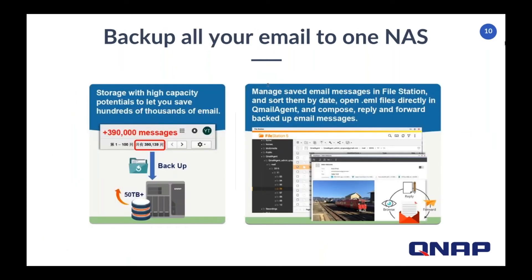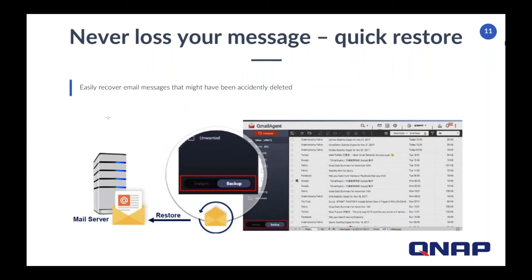Backing up your emails is a key feature of QMail Agent. This allows you to keep your email services tidy and free up storage space on your email accounts without having to worry about losing an email that you need later. QMail Agent backs up both your emails and attachments automatically. You can manage saved emails in File Station and sort them by date, open EML files directly in QMail Agent, and also reply to and forward backed-up emails. When you're freeing up space on your email service, you may end up deleting an email you might need down the road — but with QMail Agent, you can easily and quickly restore it from your backup.